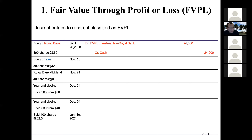November 15th: bought Tyler's 500 shares at $40 each. Pretty much the same as above — debit FVPL investments and credit cash for $20,000. Very similar to the entry above. 500 times $40 equals $20,000.